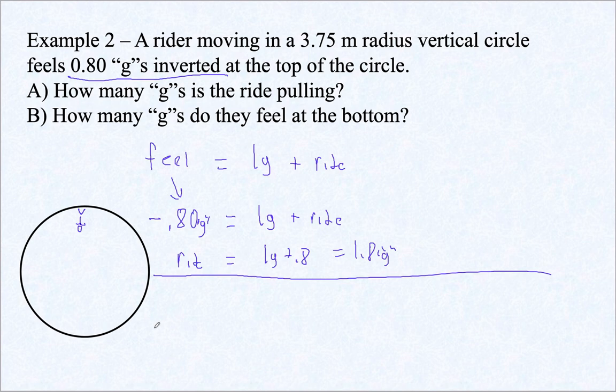So at the bottom, it's what we feel is equal to 1g plus the ride. All right, so 1g, and the ride is, we just figured out, is 1.8, is 2.8g's.